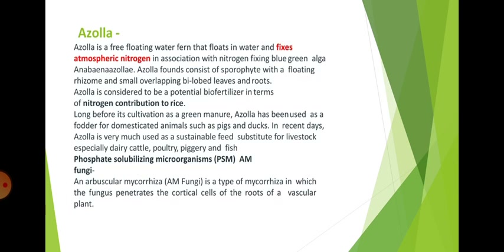Azolla is a free-floating water fern that floats in water and fixes atmospheric nitrogen in association with the nitrogen-fixing blue-green alga Anabaena azollae. Azolla fronds consist of a sporophyte with a floating rhizome, small overlapping bi-lobed leaves, and roots. Azolla is considered a potential biofertilizer in terms of nitrogen contribution to rice. Long before its cultivation as a green manure, Azolla has been used as fodder for domesticated animals such as pigs and ducks. In recent days, Azolla is used as a sustainable feed substitute for livestock, especially dairy cattle, poultry, piggery, and fish.